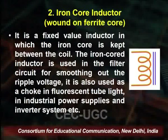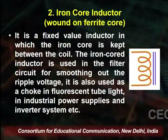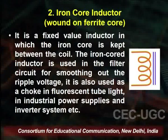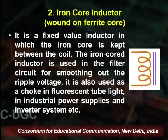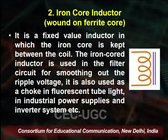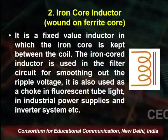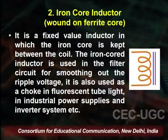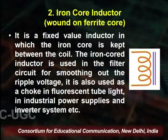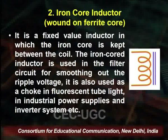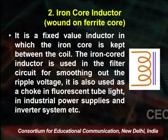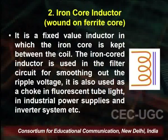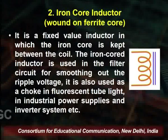The second important type is the iron core inductor, where we use the ferrite material as a core. It is a fixed-value inductor in which the iron core is kept between the coil. The iron core inductor is used in filter circuits for smoothing out ripple voltage. It is used as a choke in fluorescent tube lights. In industry, we use it for power supplies and inverter systems.